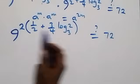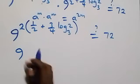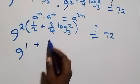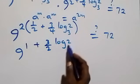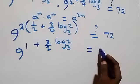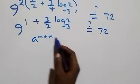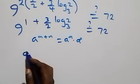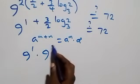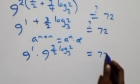Opening the bracket, 9 raised to power (1 + 3/2·log₃2) equals 72. Using the law that a raised to power (N plus N) equals a^N times a^N, we separate this into 9 raised to power 1 times 9 raised to power (3/2·log₃2) equals 72.